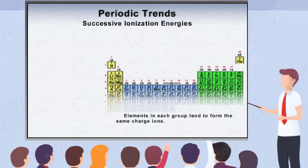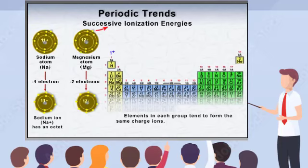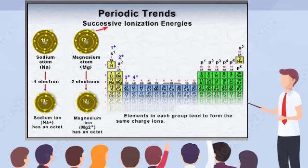The pattern in ionization energies also explains why elements in the same group tend to form the same ions. Earlier, you learned that elements in group 1A tend to form a single plus charge. Elements in group 2A tend to form a 2 plus charge, and so on. Elements within a group have similar valence electron configurations, and therefore tend to form ions of the same charge by losing electrons to reach the stable noble gas shell of the next lower energy level.